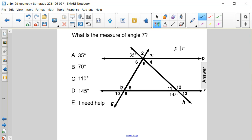Angle 7 is down here. We have parallel lines R and P, and transversal G that we're working with in this problem.